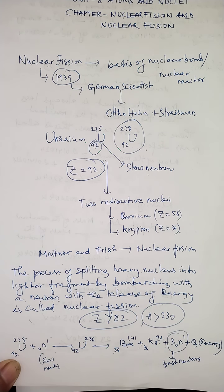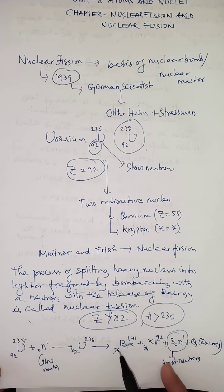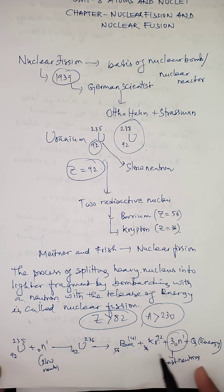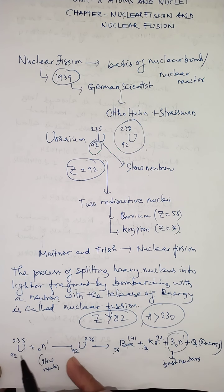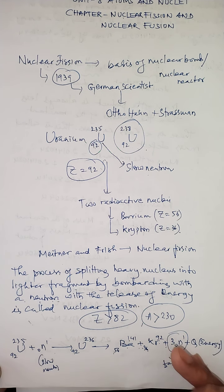The energy released is due to mass defect. When you calculate the mass of the reactants and compare it to the mass of the products, the mass of the reactants is more than the mass of the products. This loss in mass is called mass defect, and due to this loss in mass in the fission reaction, energy gets liberated.